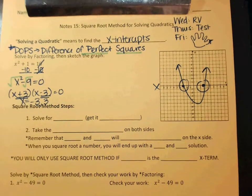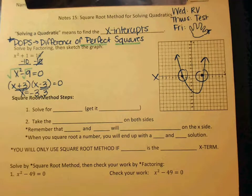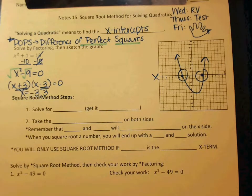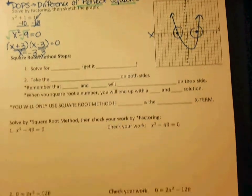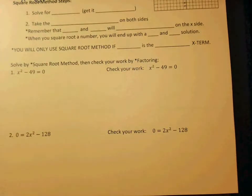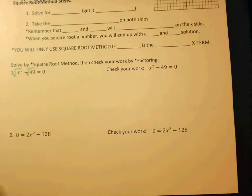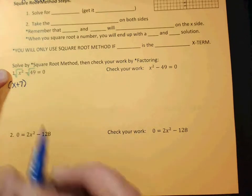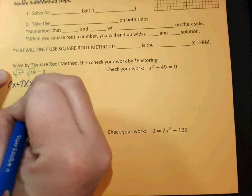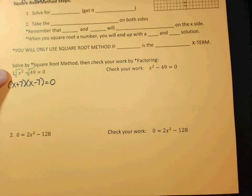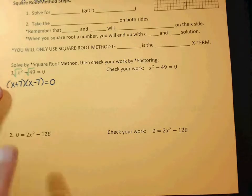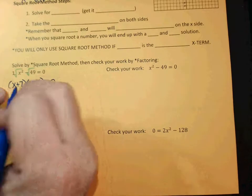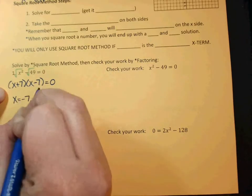We're going to do two more by difference of squares, and then we're going to learn our other method. This should be review — you should have seen this before. Look at number 1. We're square rooting both. What's the square root of X squared? What's the square root of 49? So it would be X plus 7 and X minus 7. Remember, you square root both of them and then you write your solutions. So if this is a plus 7, what's the opposite? Minus 7 and 7.